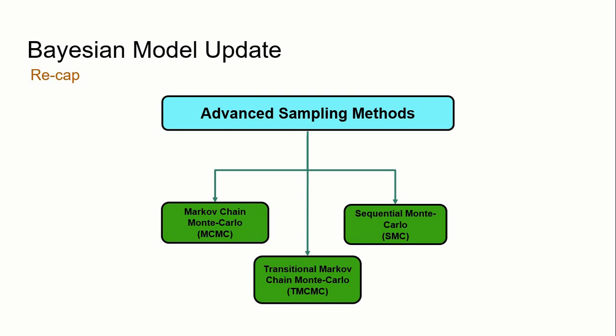When we ended the first lecture, we talked about three advanced sampling methods commonly used to address Bayesian model updating problems: Markov Chain Monte Carlo, Transitional Markov Chain Monte Carlo, and Sequential Monte Carlo samplers. In the next slide, I will go through each of these methods in detail.